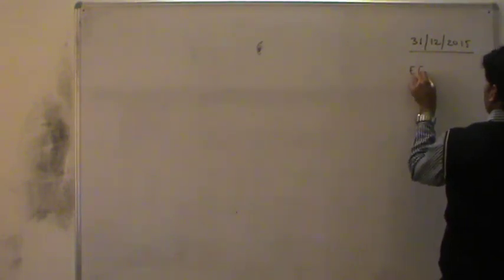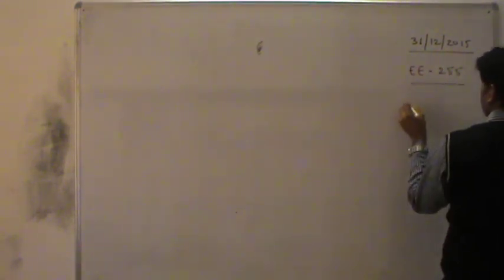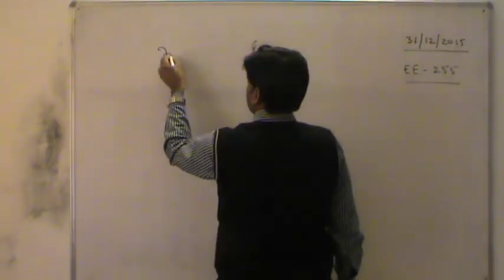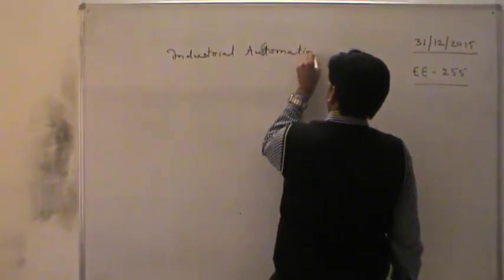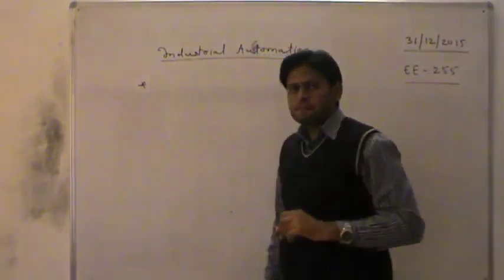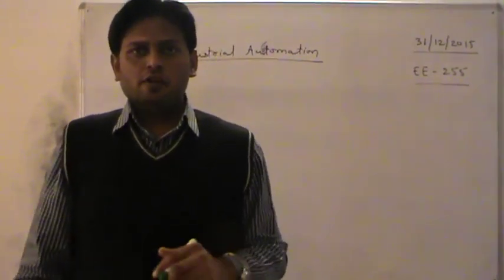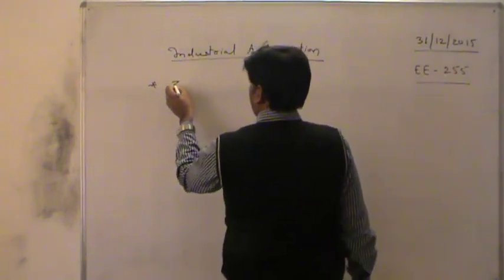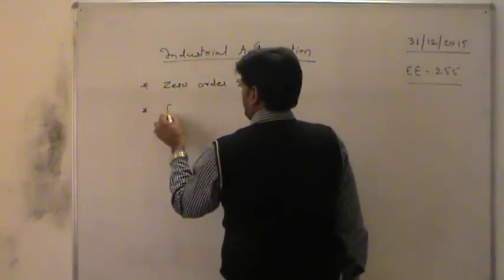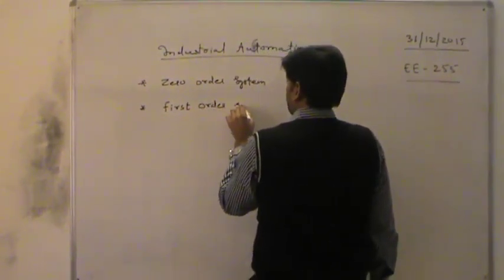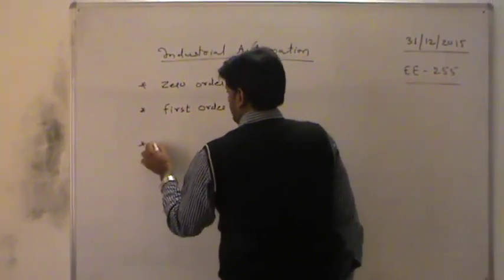Welcome to the video lectures on Industrial Automation. The subject code is EE255 and the name of the subject is Industrial Automation. In today's lecture, we are going for the discussion of zero order system, first order system, and second order system.